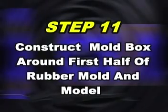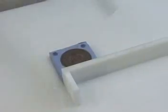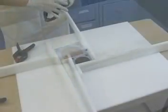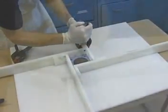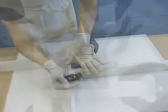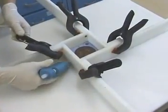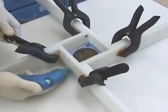The mold box is then reassembled securely around the cured rubber with half the coin model still embedded. Hot melt glue is used to make sure that the liquid rubber will be contained.